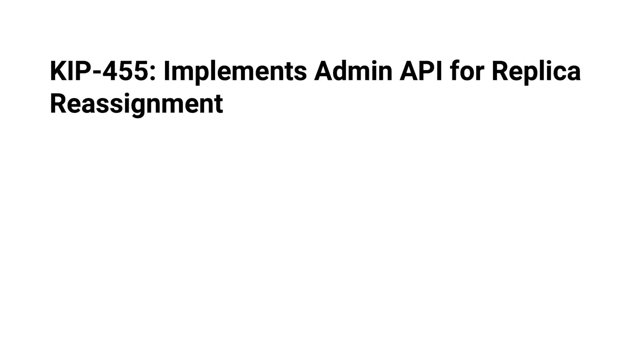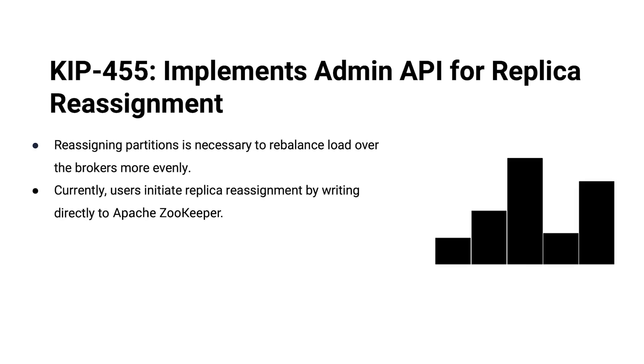Next is KIP 455, which implements an admin API for replica reassignment. Prior to this KIP, to initiate replica reassignment — that is, to move a replica from one broker to another — you actually had to interact directly with Zookeeper. There was this well-known node that you'd write to; you'd give it a batch of partitions to reassign and it would do the work of reassigning those partitions, which can involve moving a lot of data over the network. And you couldn't cancel that once it was in progress, and you couldn't add new replicas or new partitions to that reassignment operation.